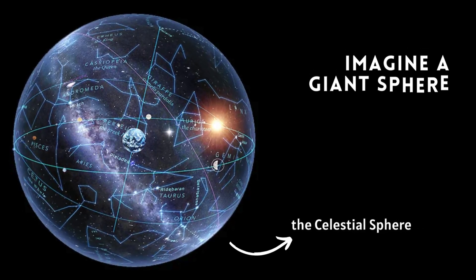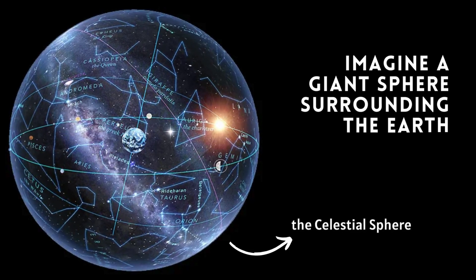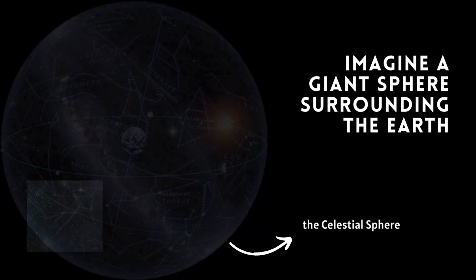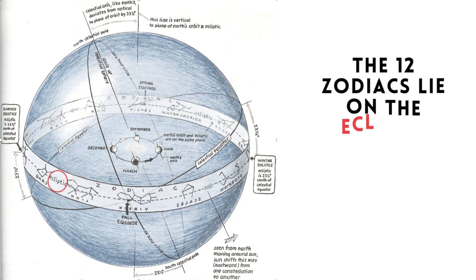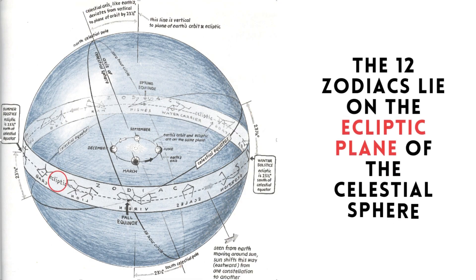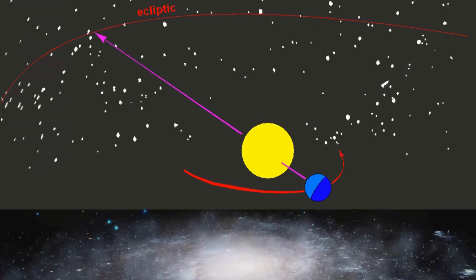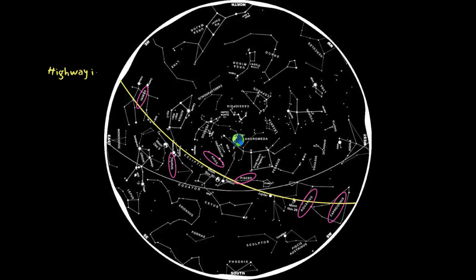Now imagine a giant sphere surrounding the earth. This is the celestial sphere, a handy tool for astronomers. The sky's constellations appear to lie on this sphere. To spot them, you need to search along a particular plane called the ecliptic. This is the path the sun appears to travel across the celestial sphere.